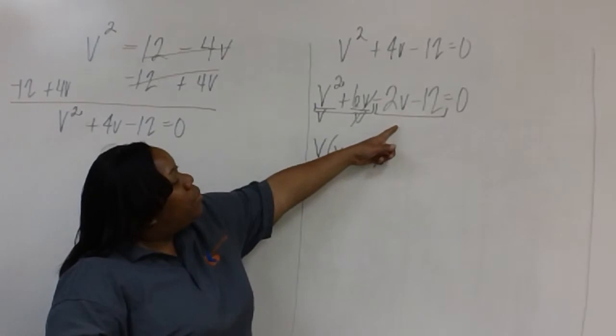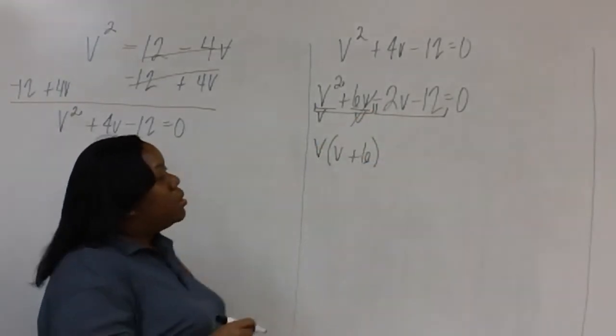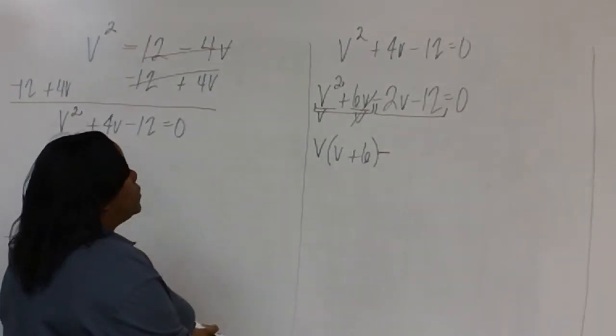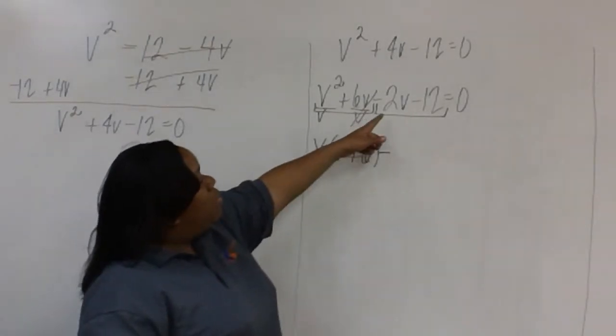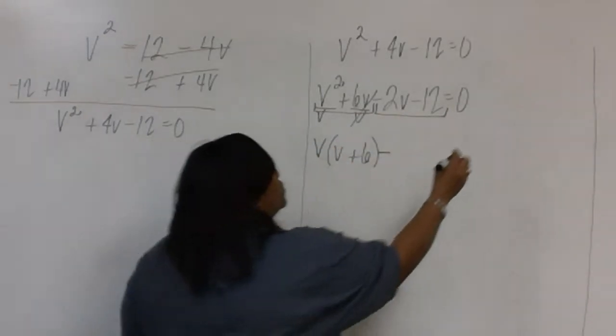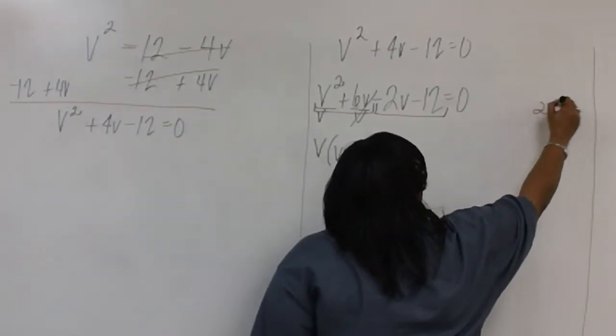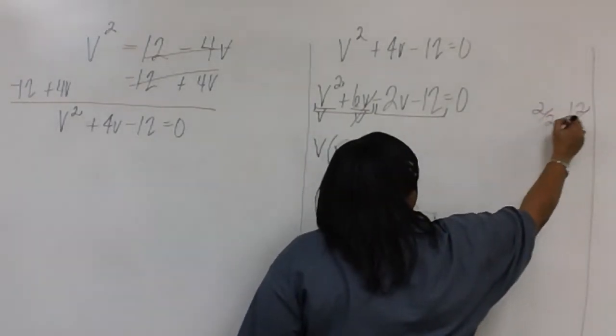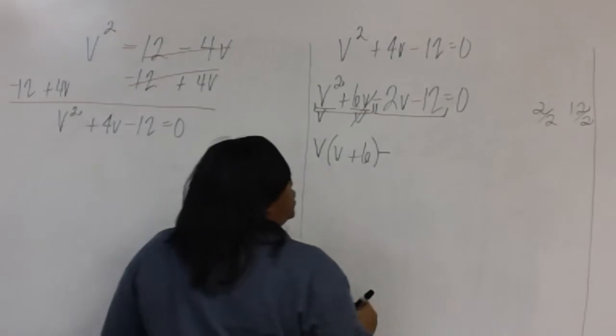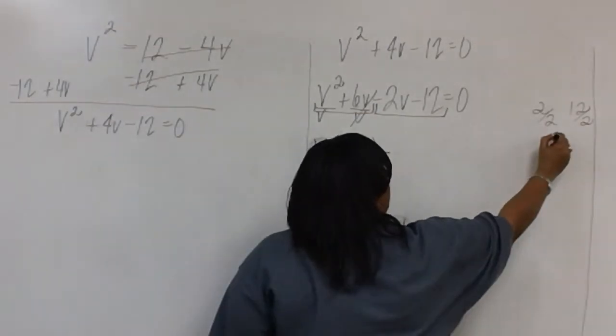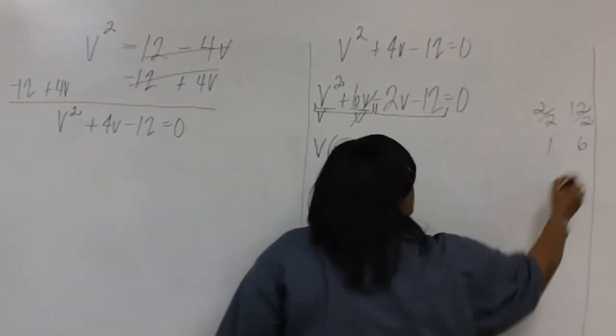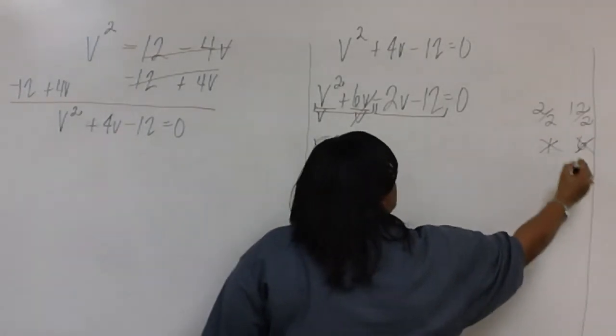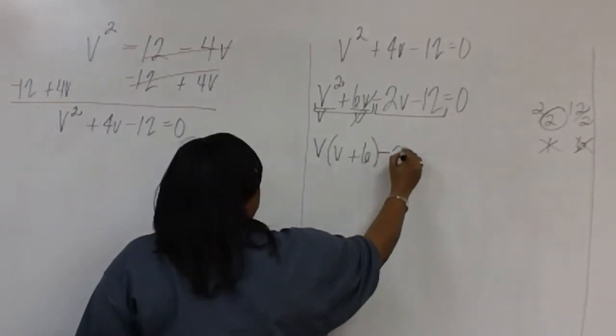In the second group, notice that the leading term is negative, so we have to factor out that negative. But we need the GCF between 2 and 12. We know that 2 will go into both of these numbers. 2 divided by 2 is 1, and 12 divided by 2 is 6. This is our stopping point. So our GCF is negative 2.